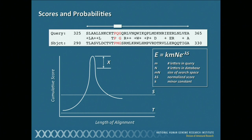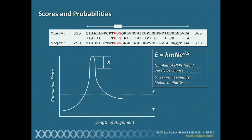There is a formula called the Karlin-Altschul equation. It uses a normalized version of the score to calculate a probability value called E. All you need to know here is that E represents the number of these high-scoring segment pairs, these local alignments, that were found purely by chance — it's a measure of the number of false positives. Because of that, you want this number to be as small as possible. Lower values of E signify higher similarity.